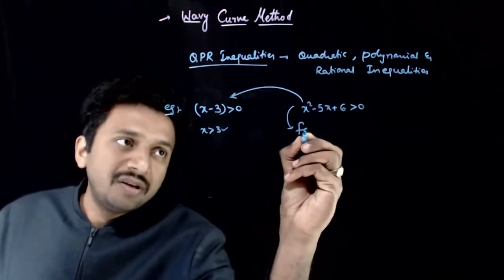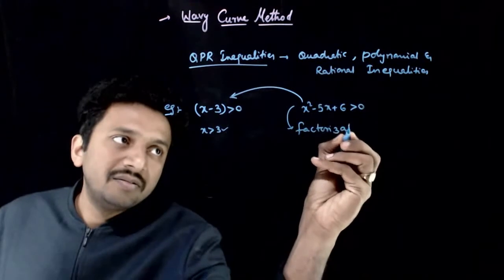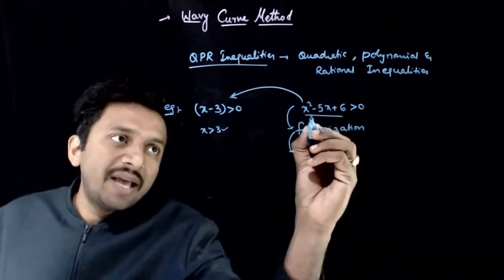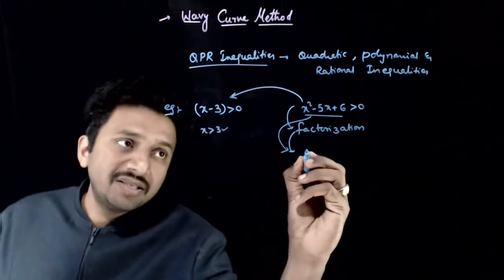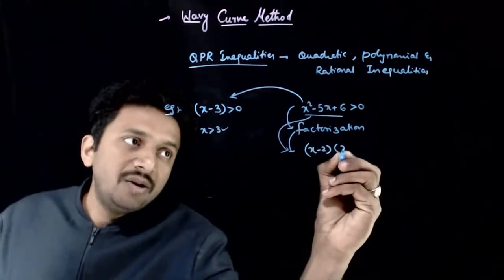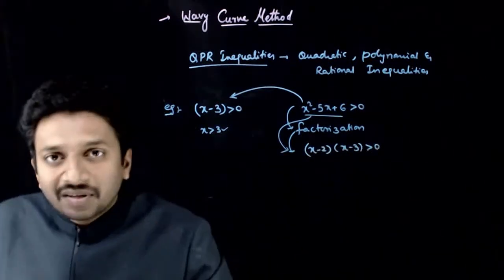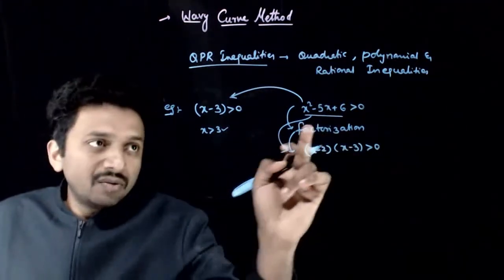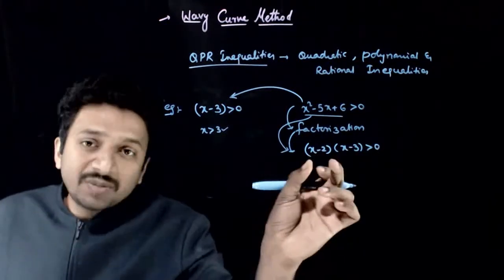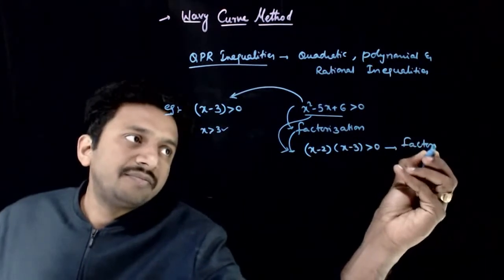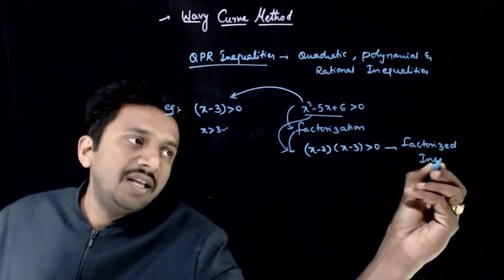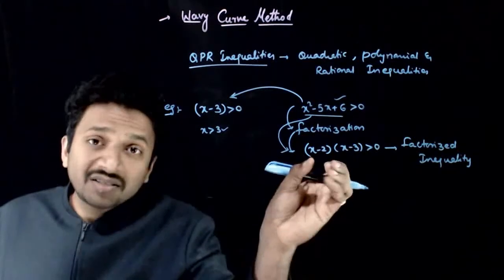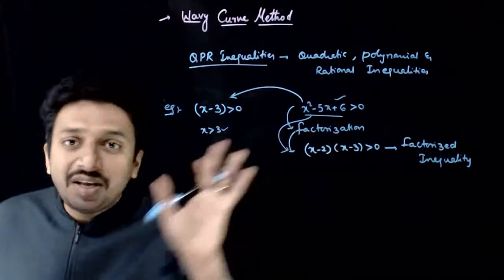We use our basic concept of factorization. You know how to factorize quadratic expressions. So x squared minus 5x plus 6 can be factorized into (x minus 2)(x minus 3) greater than 0. Once you factorize this, it becomes a factorized inequality. Till factorization it is a quadratic inequality; after that it is a factorized quadratic inequality — factorized into linear factors.